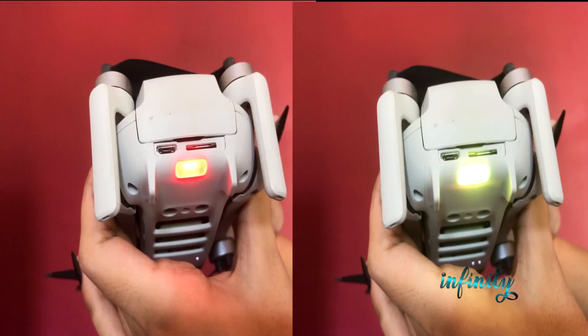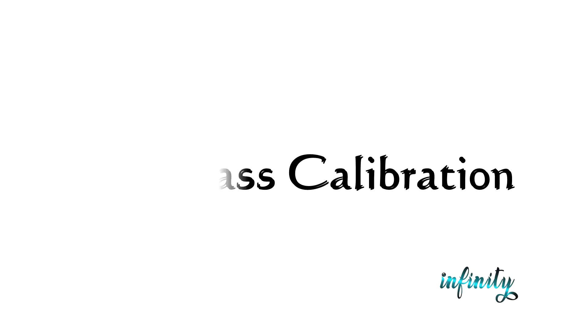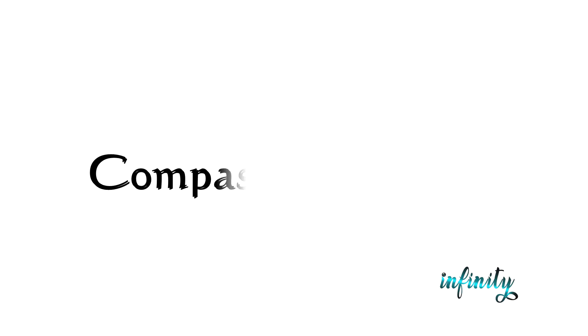Red and yellow lights blinking alternately means the aircraft requires compass calibration. That's all for today.